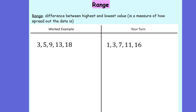There's one more term we need to take a look at. In your dark blue books, can you give me the title 'Range'? And underneath, write: the range is the difference between the highest and lowest value. Pause the video and complete that now please.